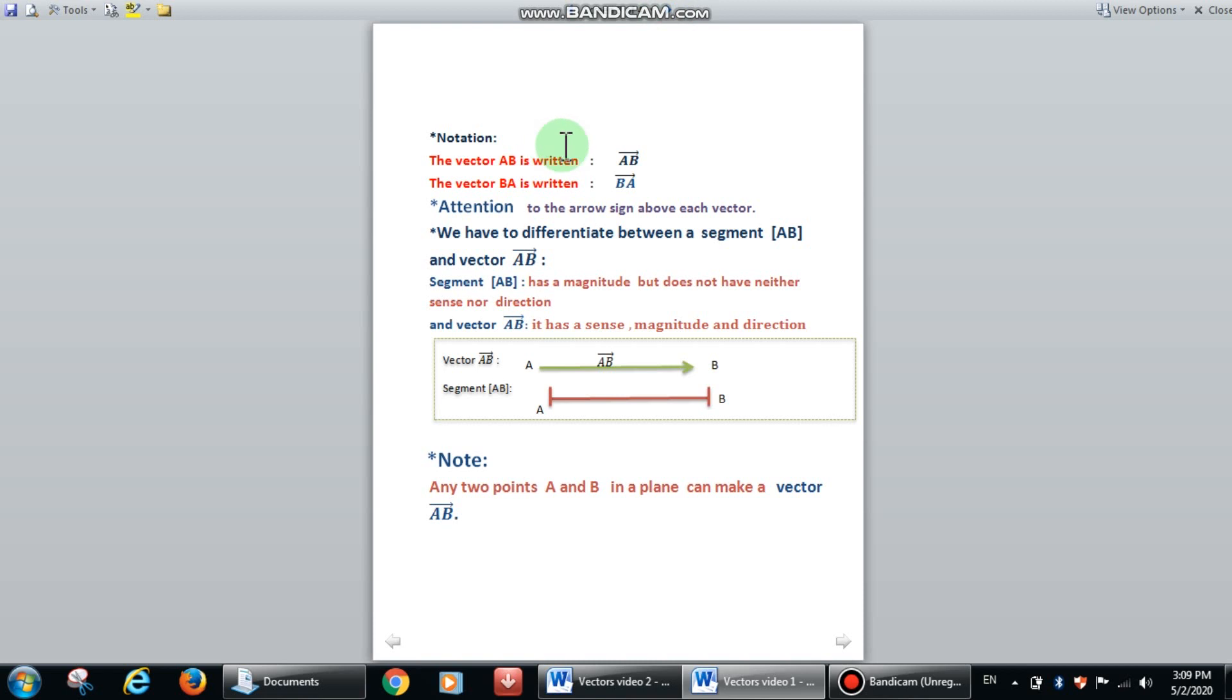Vector AB is written as AB vector, A beginning point and B ending point, and don't forget to put the arrow. Vector BA is written as B, the beginning point, and A, the ending point. Don't forget to put the arrow.